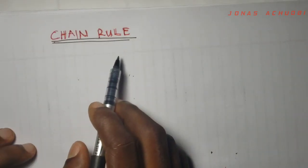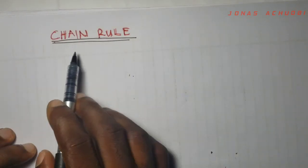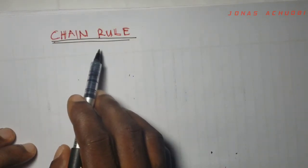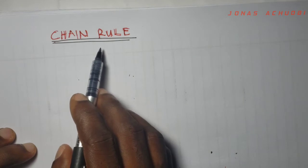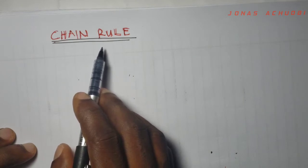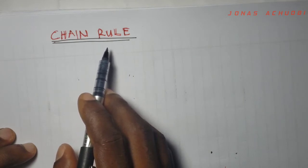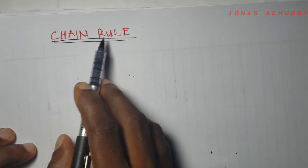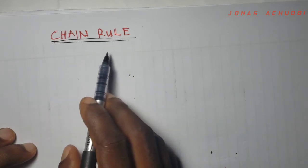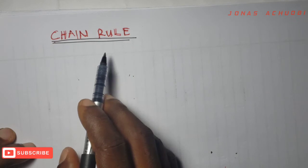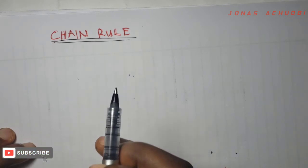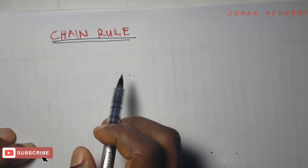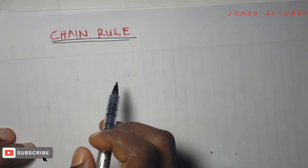The chain rule, which we otherwise refer to as a function of a function, is a rule of differentiation that helps us to differentiate composite functions.